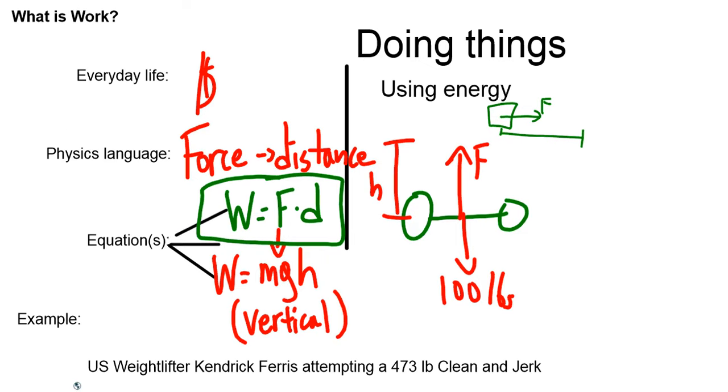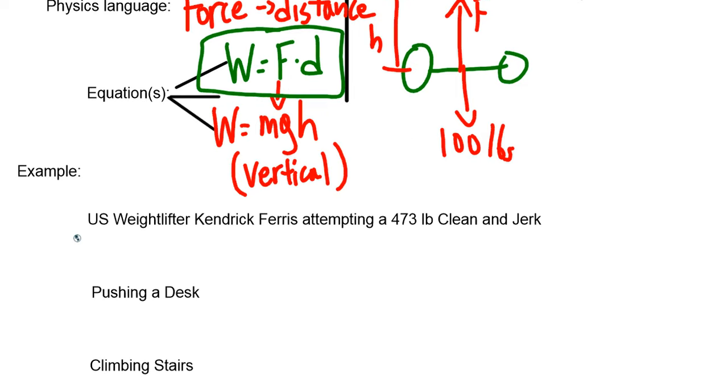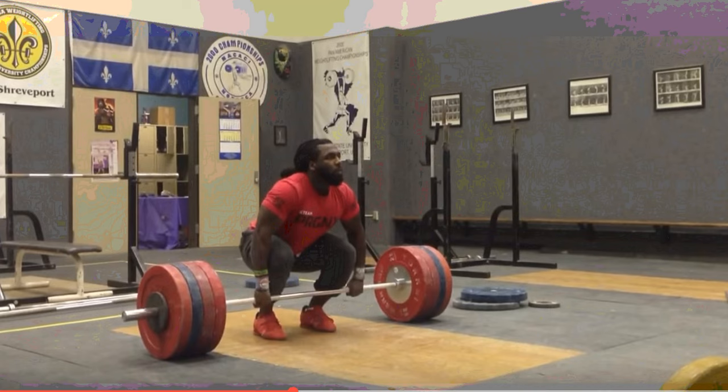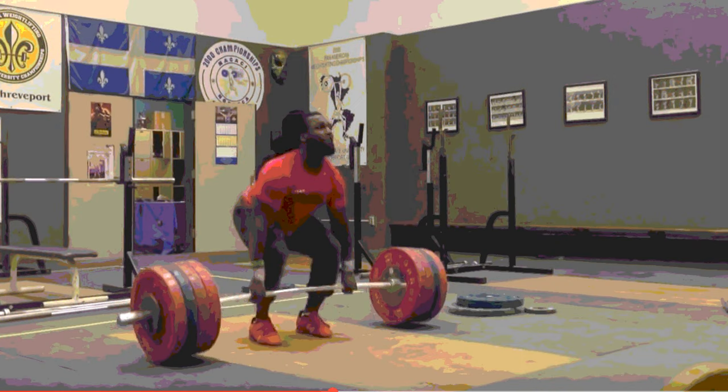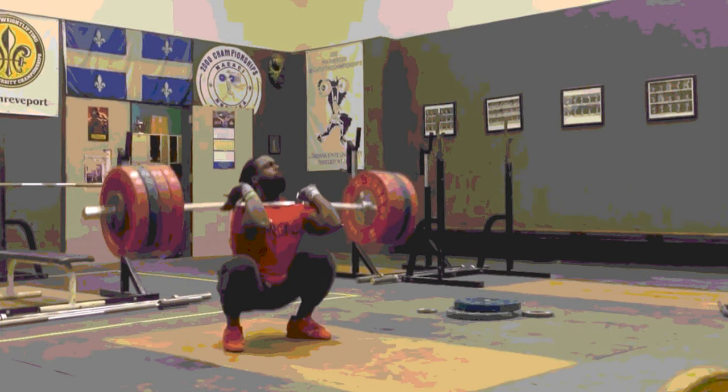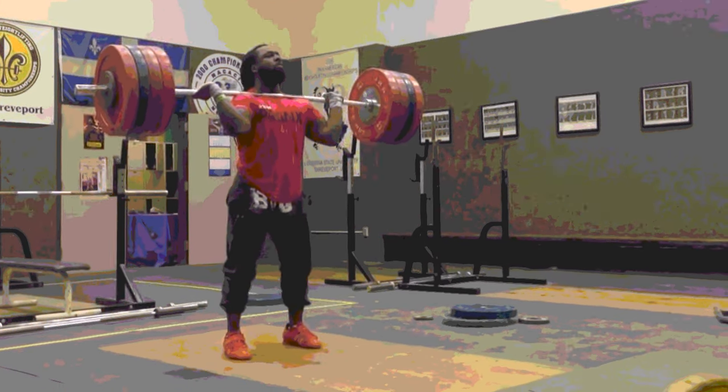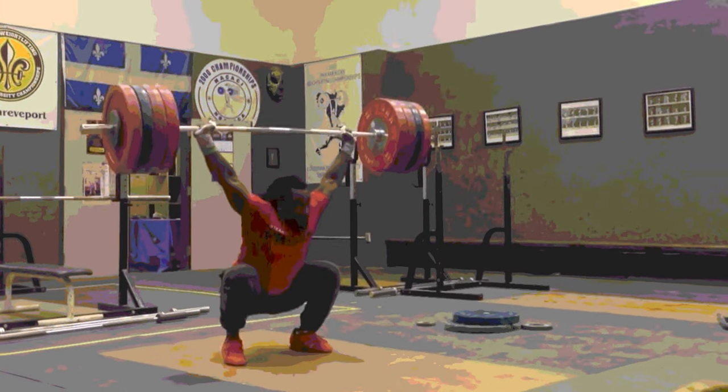So let's take a look at an example. So I'm going to show and talk about at least two examples. The first one is US Olympian Kendrick Ferris doing a 473 pound clean and jerk. And you're going to look at how he uses the concept of work to think about lifting a weight up in the air. So the weight is about to be lifted off the ground. We're going to go ahead and play it and examine what happens. There's the clean. And here's the jerk. And up in the air.